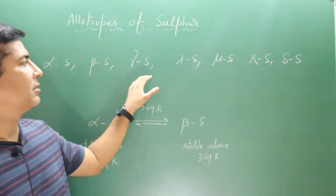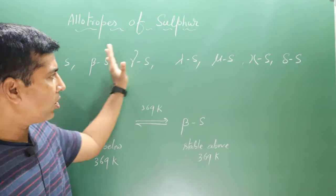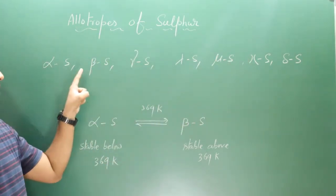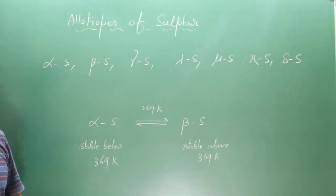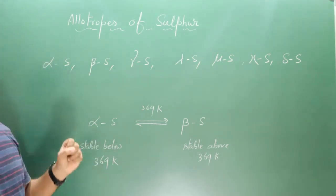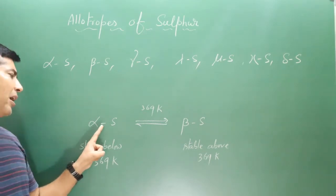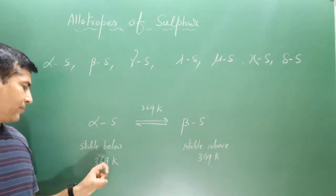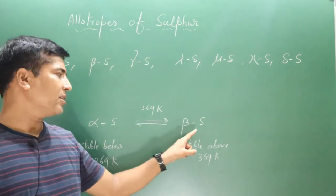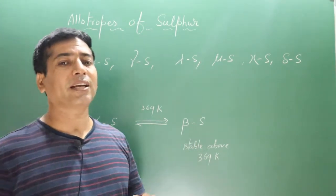The allotropes of sulfur are alpha, beta, gamma, lambda, mu, chi, and delta sulfur. Out of all these allotropes of sulfur, alpha sulfur as well as beta sulfur are the most important. When we talk about their stability, alpha sulfur is in the stable state below 369 Kelvin temperature, and beta sulfur is in the stable state above 369 Kelvin temperature.